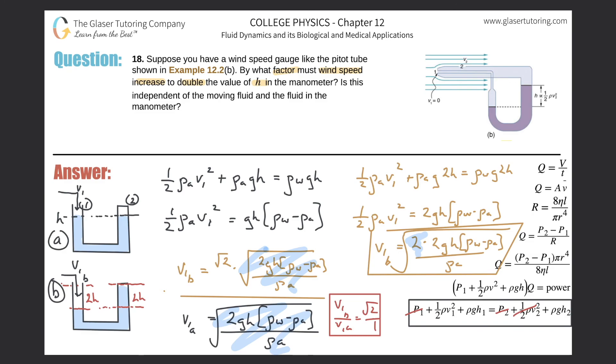So last, it says, is it independent of moving fluid and the fluid in the manometer? Well, you tell me. Does this have anything to do? We had density of the water and the air. I put that all in, but what happened in the end? They both canceled, so obviously not. Thanks for tuning in. Appreciate it very much. Hope you subscribe, and we'll see you next time.